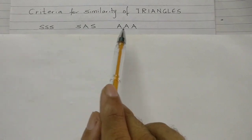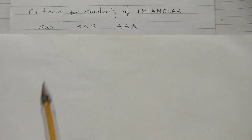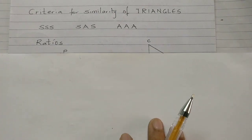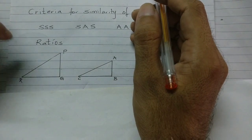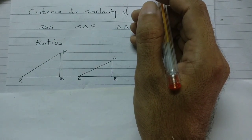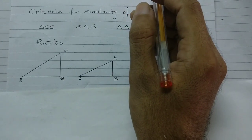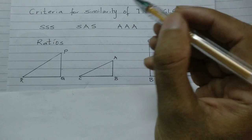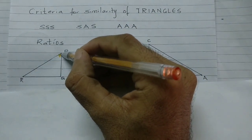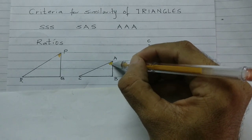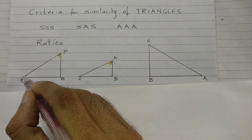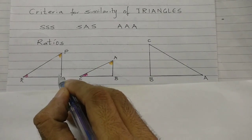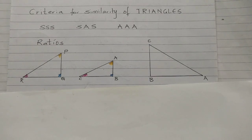Once you have found out which criteria makes two triangles similar, then we write down the ratios. Let's take an example. I have triangle PQR and triangle ABC — both are similar to each other by, let's say, the AAA similarity test. In this case, angle P is equal to angle A, angle R is equal to angle C, and angle Q is equal to angle B.